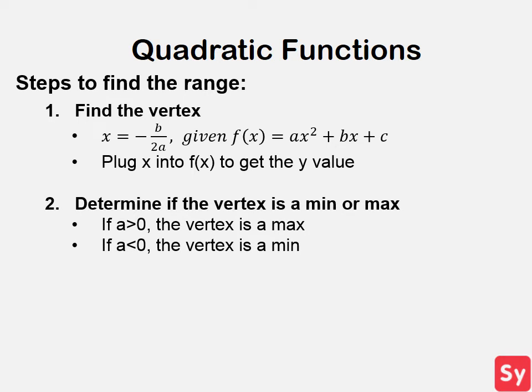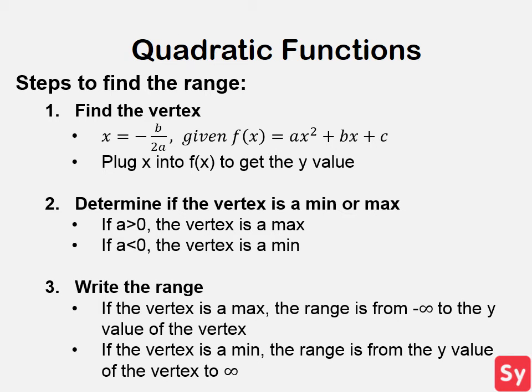Second, determine whether the vertex is a minimum or a maximum. If a is greater than 0, then the vertex is a max. If a is less than 0, then the vertex is a min. Lastly, write the range. If the vertex is a max, meaning the parabola opens down, the range is from negative infinity to the y-value of the vertex. If the vertex is a min, meaning the parabola opens up, the range is from the y-value of the vertex to infinity.